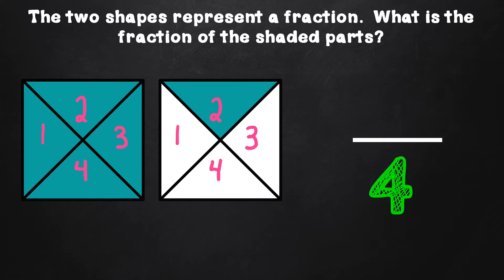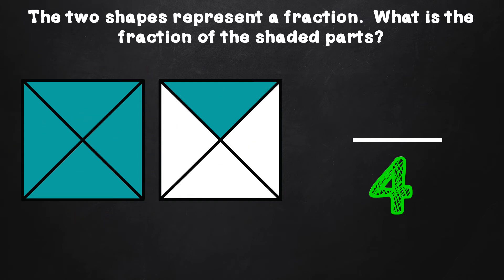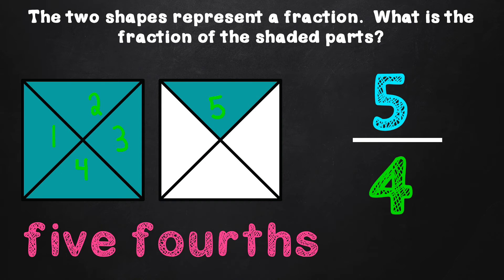Remember that to name the fraction of objects beyond or more than one whole, we look at how many parts one shape or object is partitioned into. Now to determine or figure out the numerator, we are going to count the total pieces or parts that are shaded: one, two, three, four, five. Since there are a total of five pieces or parts that are shaded, the number five goes in the numerator because it represents the parts shaded. So the fraction for the shaded parts in this question is five-fourths.